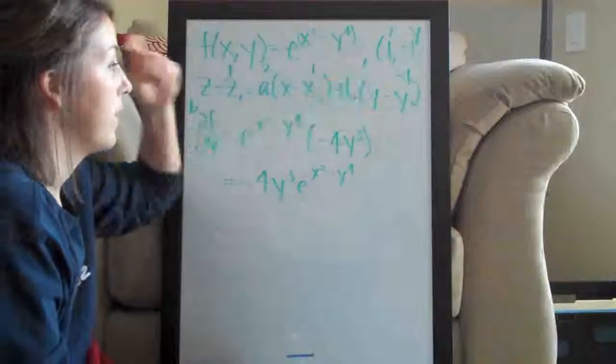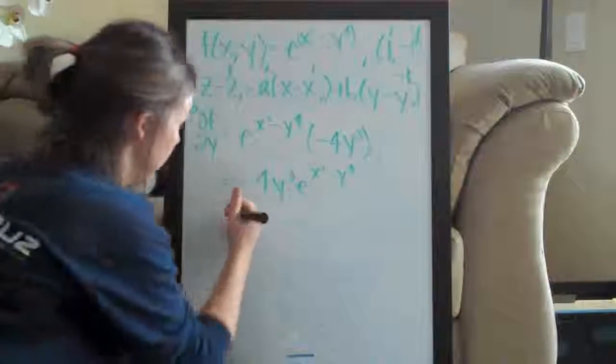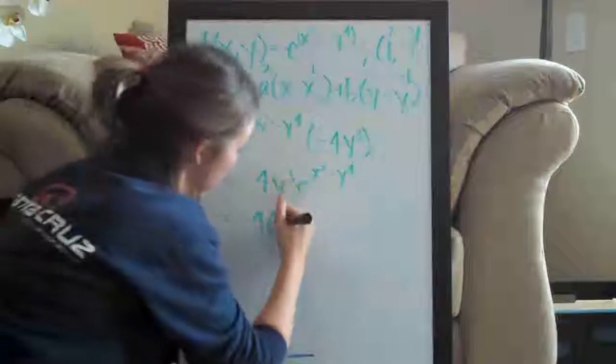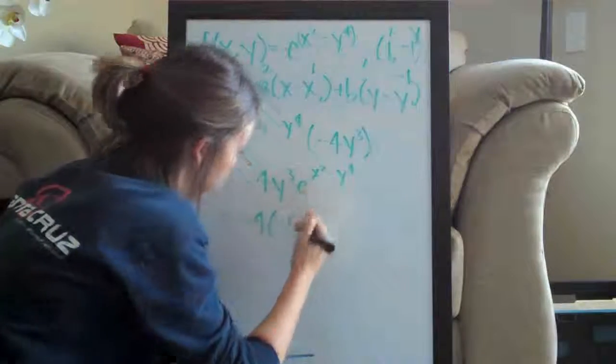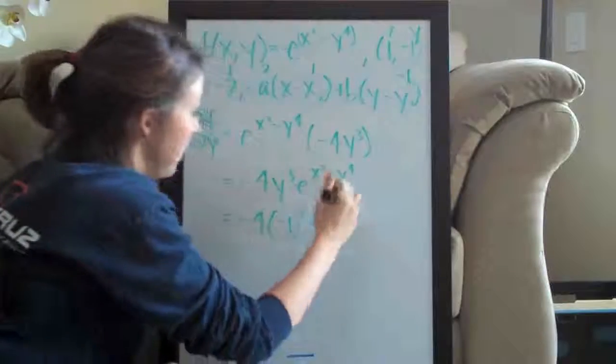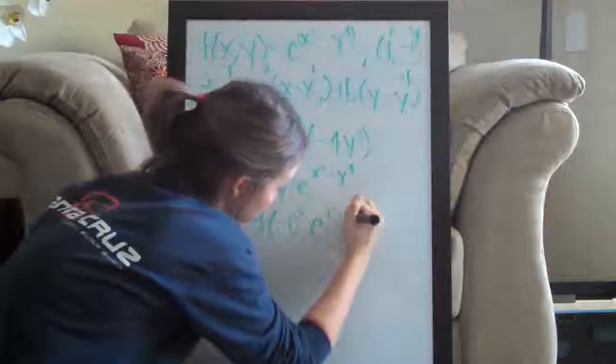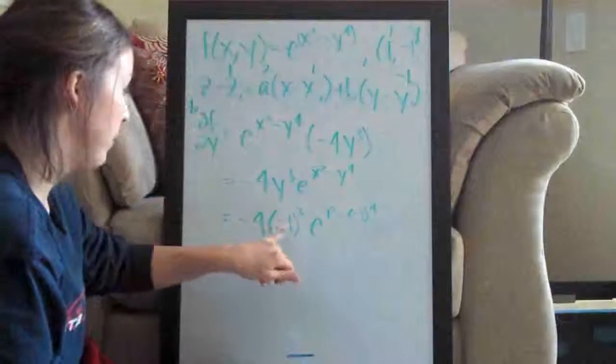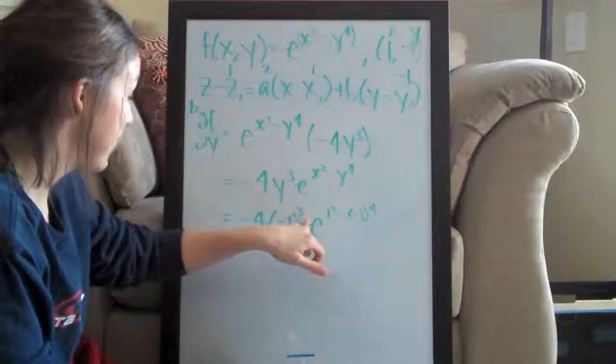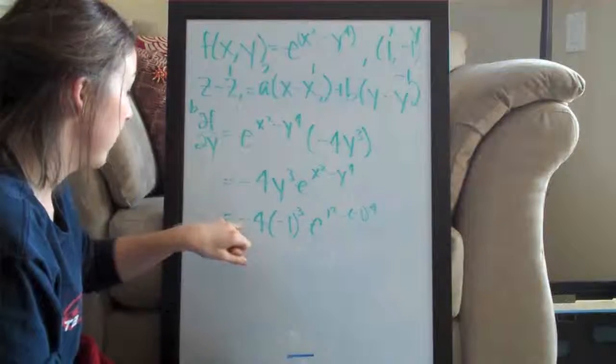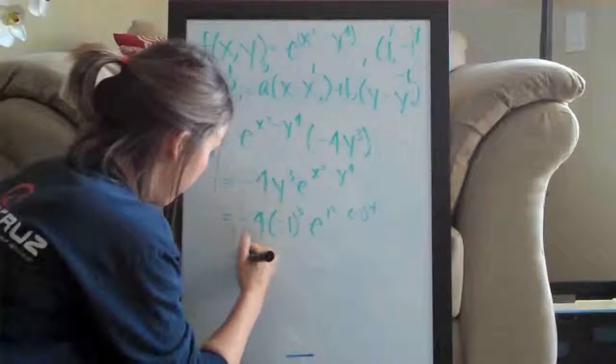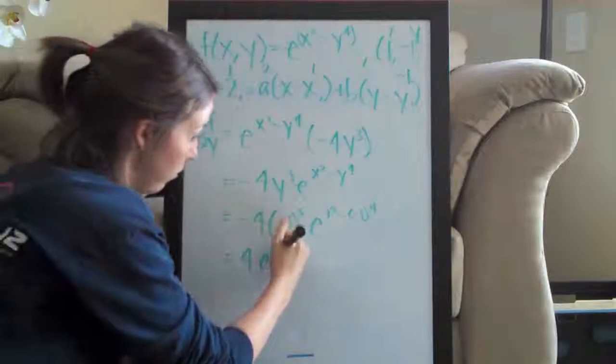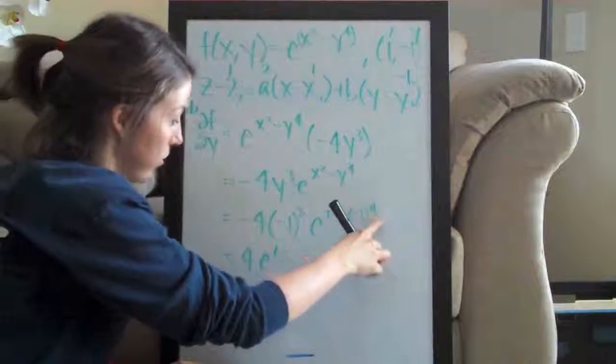Now we go ahead and plug in the point again. So equals negative 4 times negative 1 cubed e, and then remember we did 1 squared minus negative 1 to the fourth. Alright, so negative 1 cubed is negative 1. Negative 1 times negative 4 is positive 4. And then e, and we did this before: 1 minus negative 1 to the fourth is 1, so 1 minus 1.